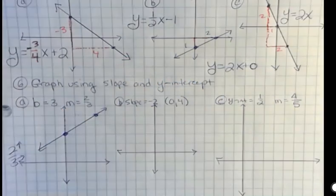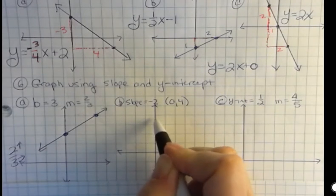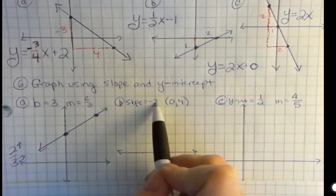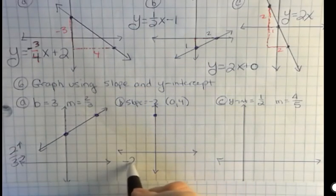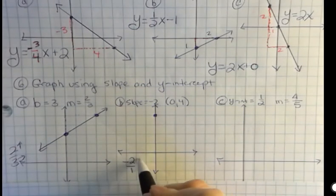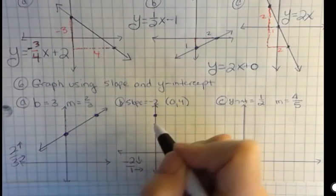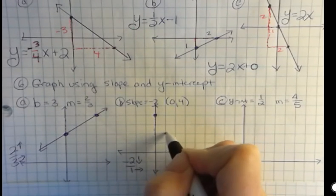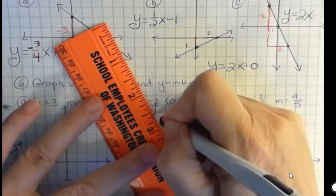All right, in the next one, I have the point (0,4). My slope is negative 2. I should see a line that's falling then. If I have negative 2, I can put a 1 under it, and that tells me to go down 2 but over 1. Down 2 over 1 puts me right there, and that's all I need to graph that equation.